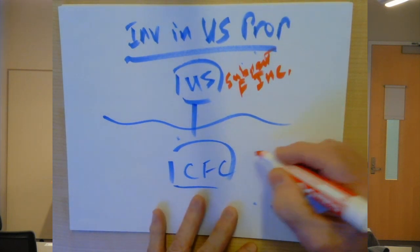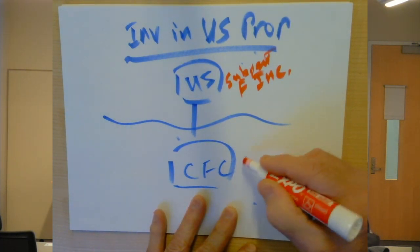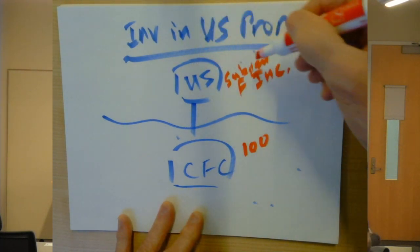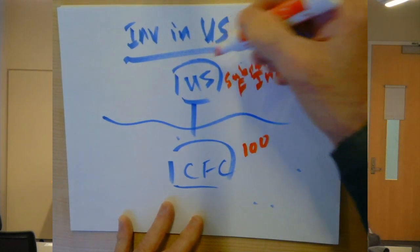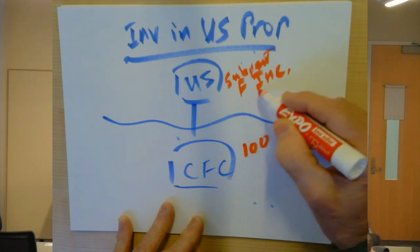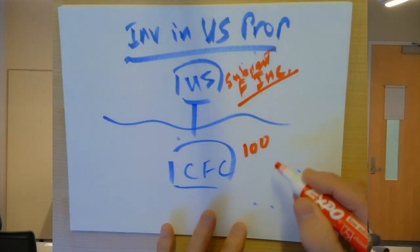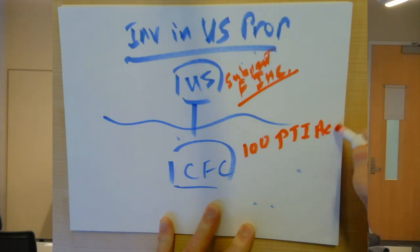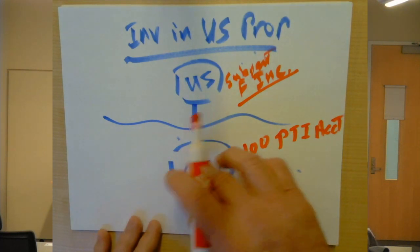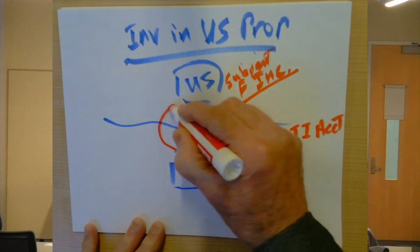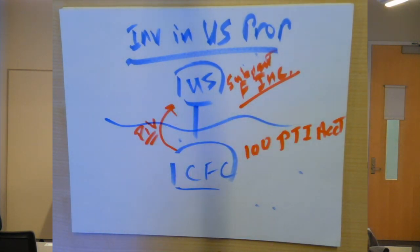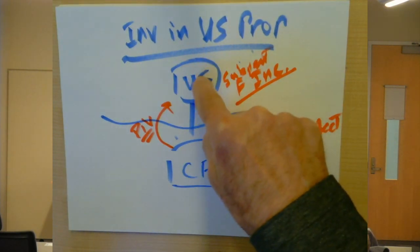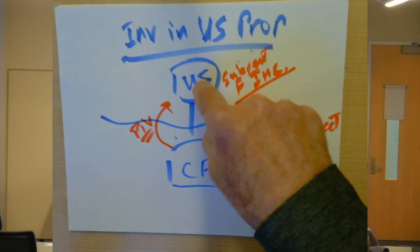If we have 100 of subpart F income over here, and as a result the U.S. shareholder recognizes that 100 of income within its tax return as a subpart F inclusion, that 100 creates a previously taxed income account so that in the future when the CFC pays an actual dividend, it will be treated for U.S. purposes not as a dividend, because all we're doing is paying an amount that they've already recognized as income.